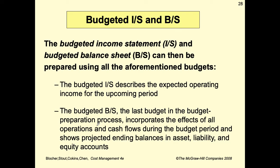The budgeted income statement and budgeted balance sheet are then prepared using all the aforementioned budgets. The budgeted income statement describes the expected operating income for the upcoming period. The budgeted balance sheet incorporates the effects of all operations and cash flows during the budget period and shows projected ending balances in asset, liability, and equity accounts.